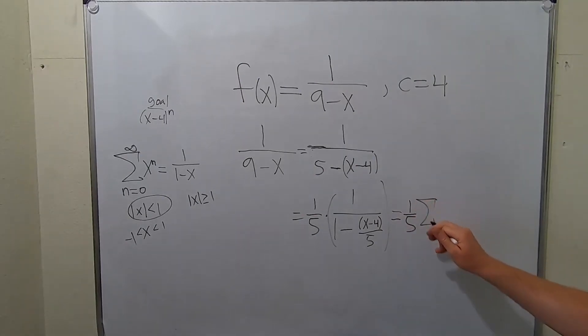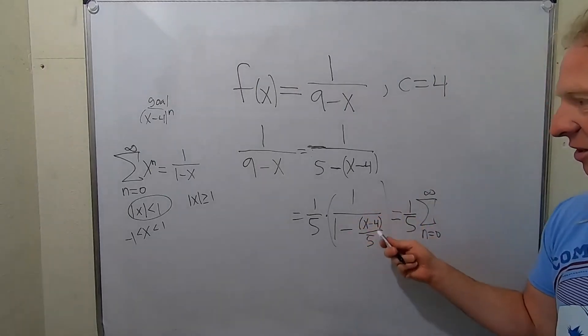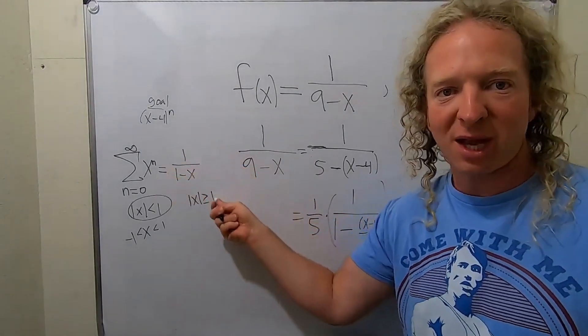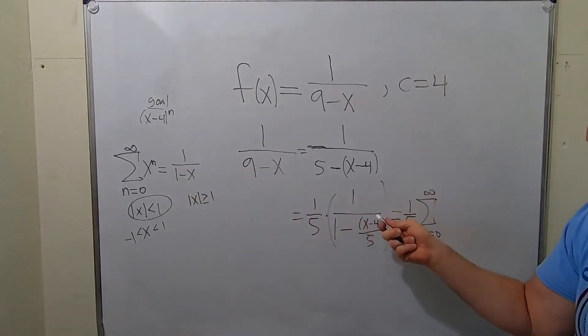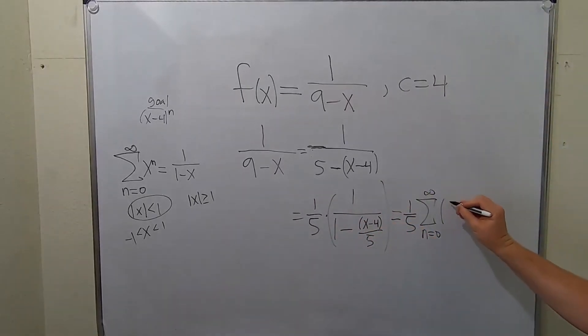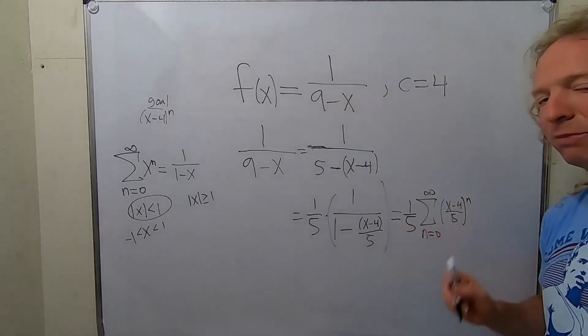And so now you can invoke your super powerful formula. So this is equal to 1 fifth. And this is equal to the infinite sum. As n runs from 0 to infinity. This is your x right here. You see? It's 1 over 1 minus x. 1 over 1 minus that. So it's that whole thing to the n power. We're not done.